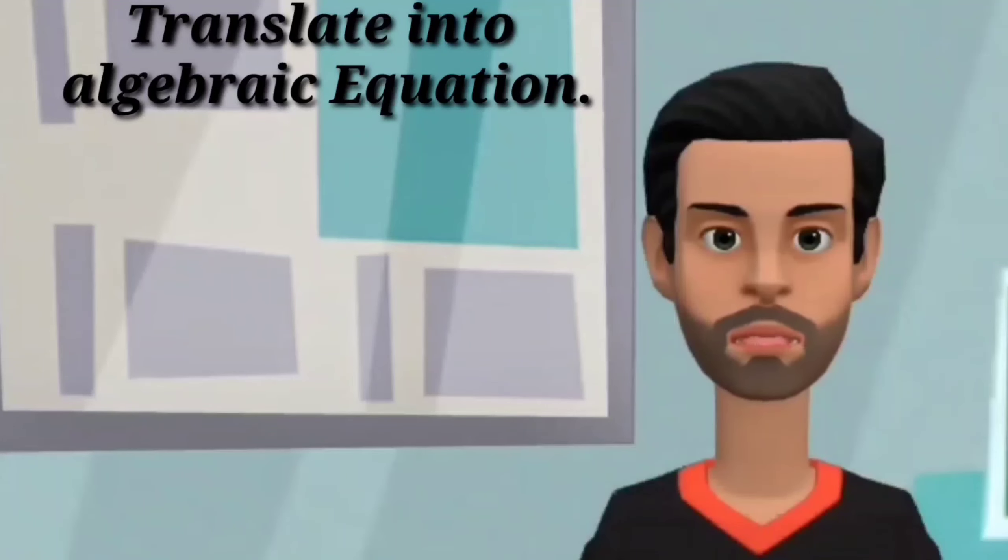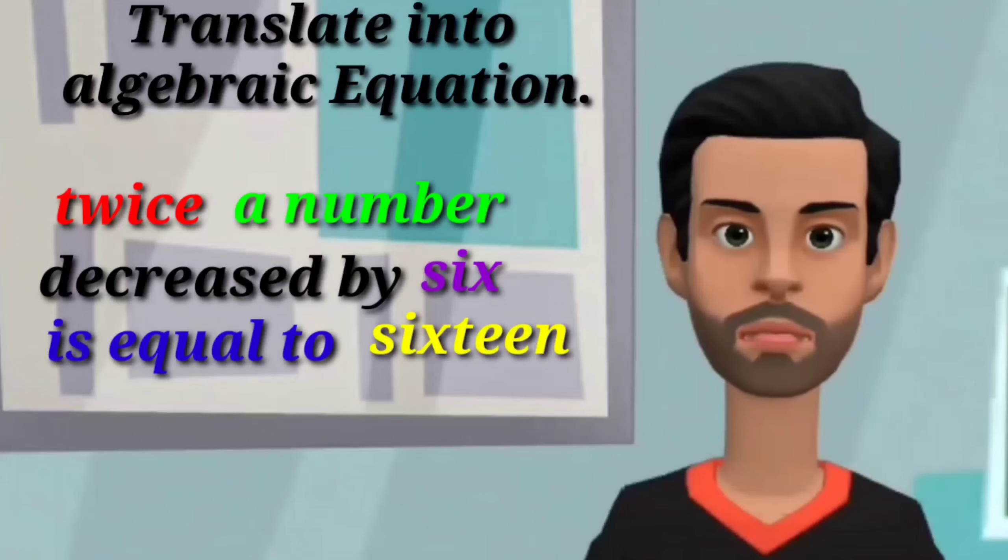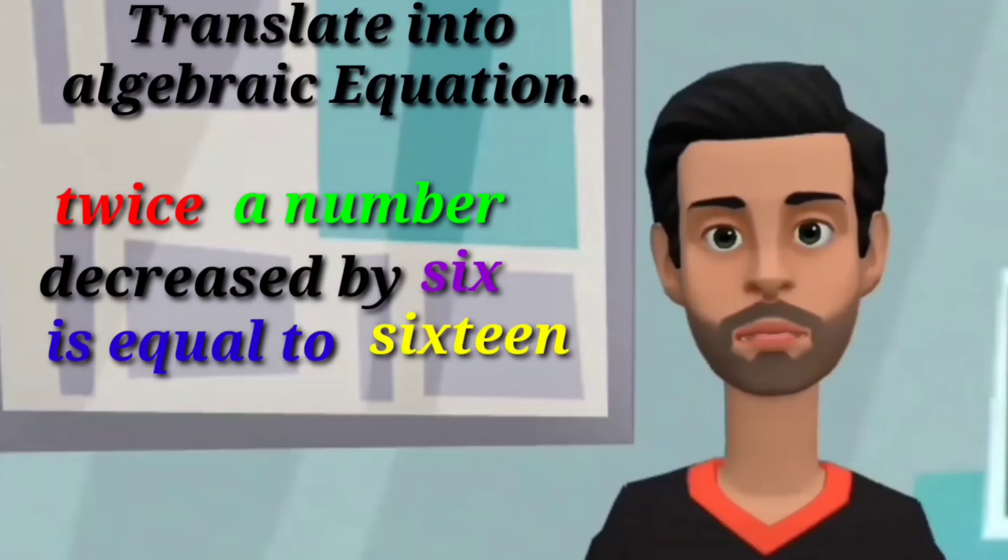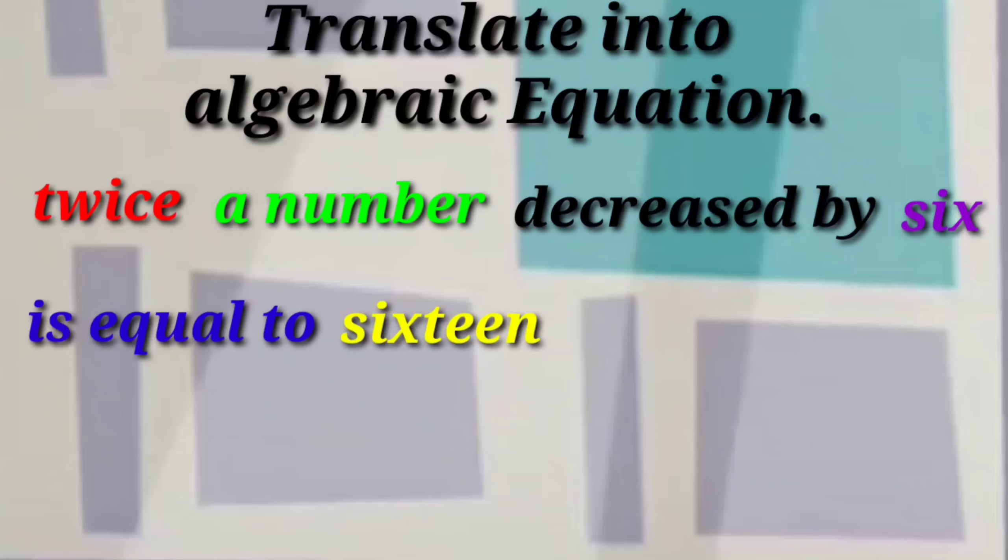Another example. Translate into algebraic equation. Twice a number decreased by six is equal to sixteen. Twice means you multiply a variable by two. Example: two times B.